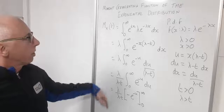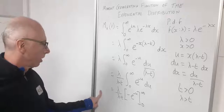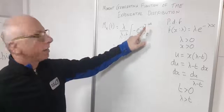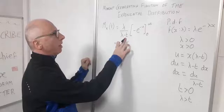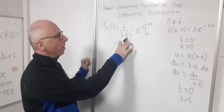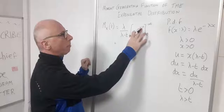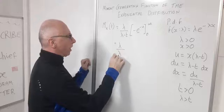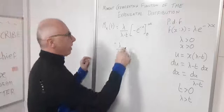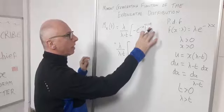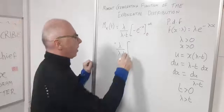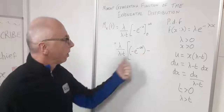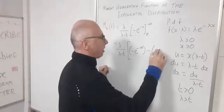Evaluating the bounds: at infinity, −e^(−∞) approaches 0. At zero, we subtract −e^(0). So inside the brackets we have [−e^(−∞)] − [−e^(0)], which equals 0 − (−1).